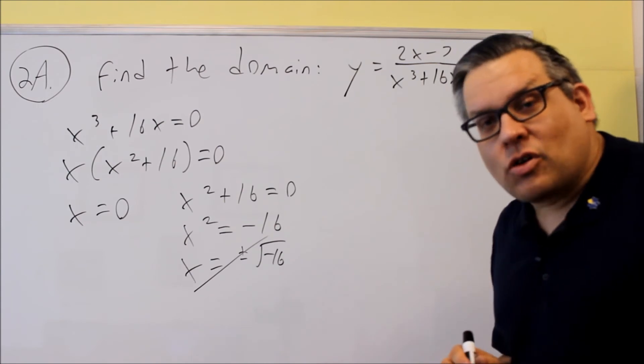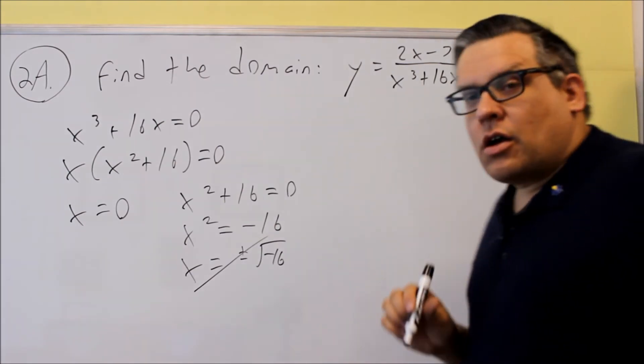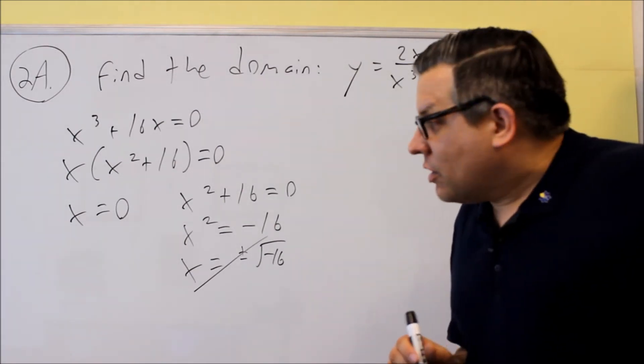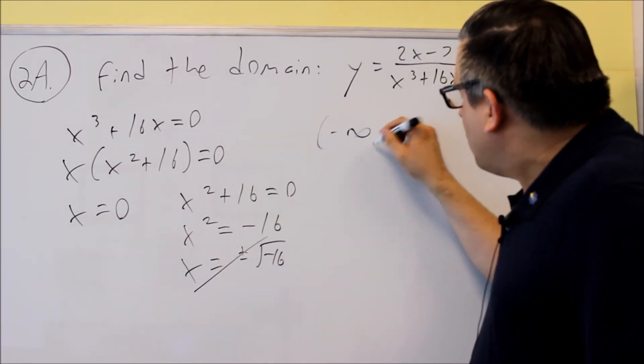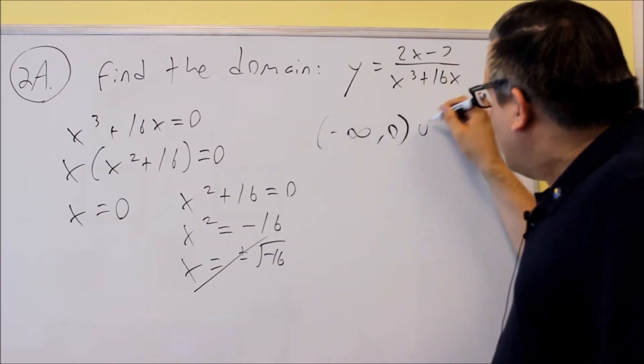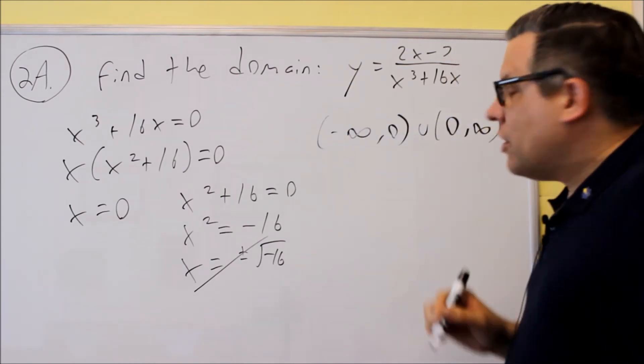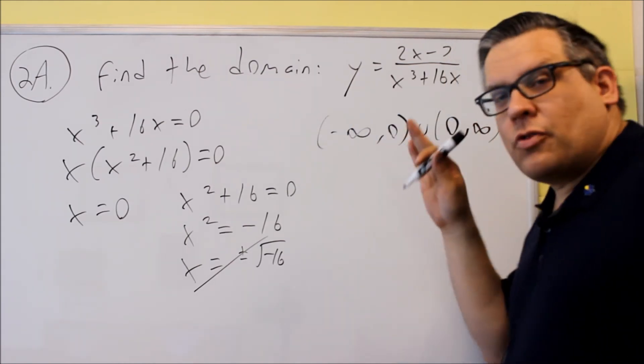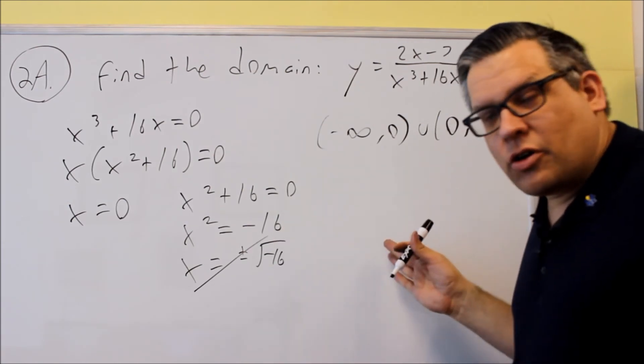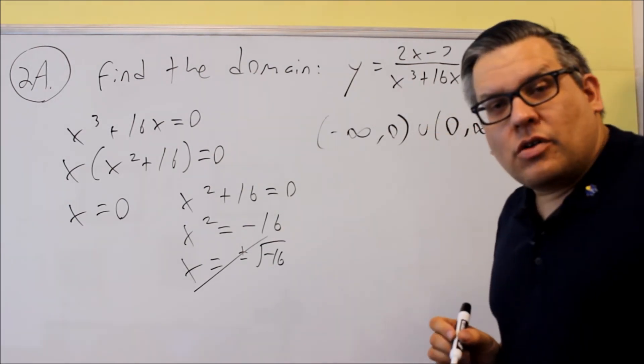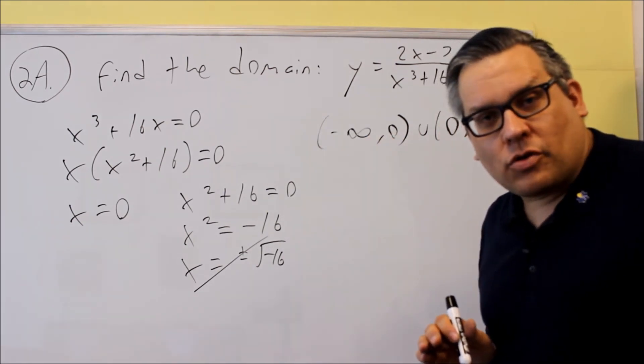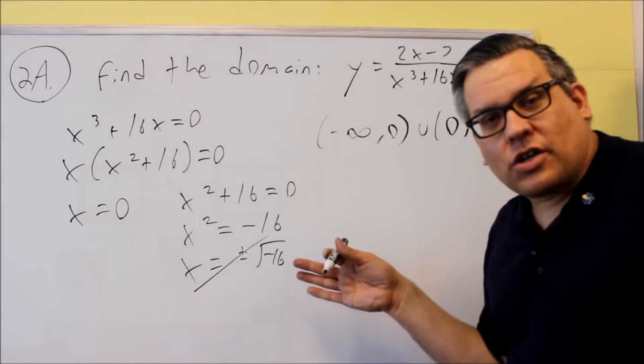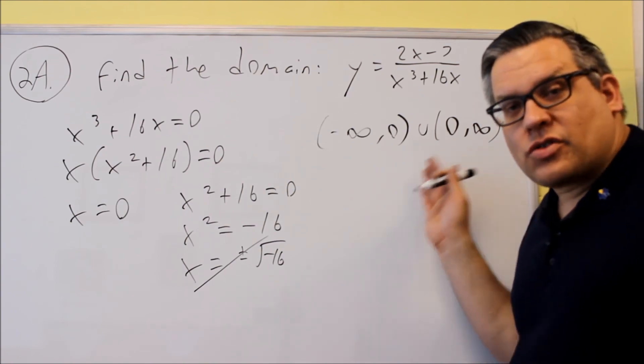All other numbers, it's going to work. So we need to write our answer in interval notation to express every number except for zero. We're going to do negative infinity to zero, and then zero to infinity. So we're including all the numbers before the zero, all the numbers after the zero, but we're not including zero itself. You want to also make sure on this problem that you know how to write answers in interval notation. We're including all the numbers except for zero.